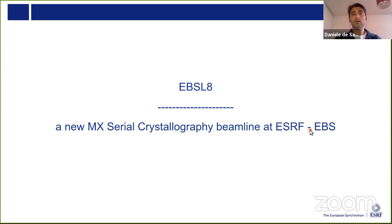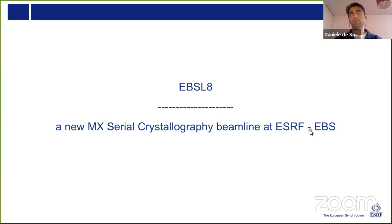Now I will show how we try to convey all these ideas and build new tools — the new ID29, which is the project EBSL8. This new beamline is designed to better profit from the new Extremely Brilliant Source while providing better structural information at a time resolution in between what can be done at a free electron laser and at a third-generation synchrotron — more in the microsecond time regime.